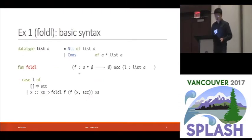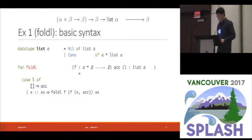Right, so our first Timo example is the fold-left function on lists. Timo can be seen as an extension of the ML language, ML-type system. So this is just the normal ML code for fold-left. Now, let's look at what the type of this fold-l function is. So this is its normal ML type.